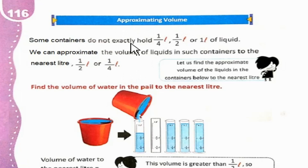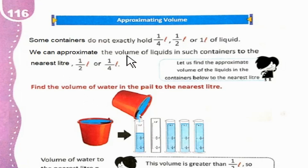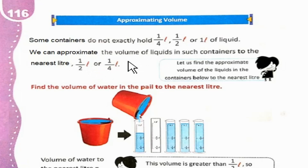Some containers do not exactly hold 1/4 liter, 1/2 liter, or 1 liter of liquid. Kuch containers mein exactly 1/4 یا 1/2 یا 1 liter liquid nahin hota. We can approximate the volume of liquids in such containers to the nearest liter, half liter, or 1/4 liter. ہم اندازہ لگا کر ان containers میں liquid کا volume قریبی half liter, 1/4 liter یا 1 liter تک بتاتے ہیں.